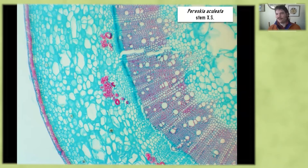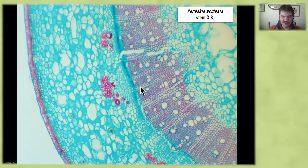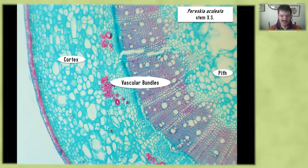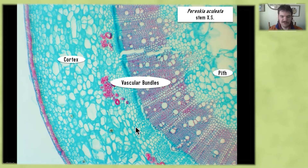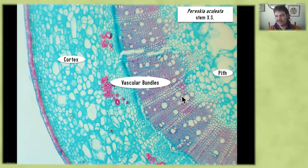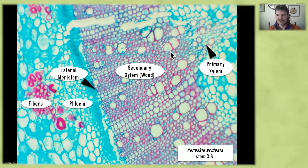Now that we've introduced an areole, we'll switch gears back to some stem anatomy. This is a beautiful cross section of a Pereskia aculeata stem. We haven't talked about stem anatomy for a little bit, so we'll go back to some basic terms. In the center of the stem, we have a ring of vascular bundles. Then to the inside of the vascular bundles, we have the pith. And then to the outside of the vascular bundles, we have the cortex. Ground tissue serves as storage, vascular tissue translates water and nutrients throughout the plant. For Pereskia, I want to focus on the structure of an individual vascular bundle.